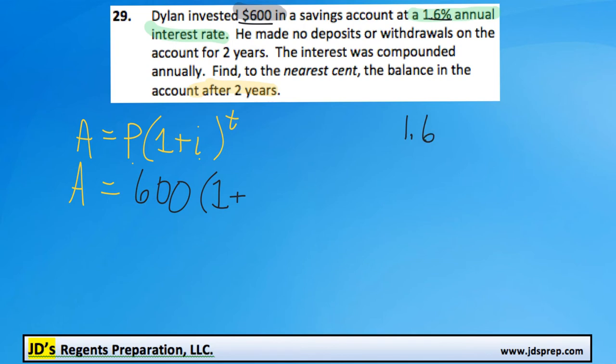So 1.6% to convert into the decimal format, we're going to divide by 100, and that will get us 0.016. So that's what we're going to add to the number 1 here. And then our time, T, is 2 years, so it's going to be to the power of 2.